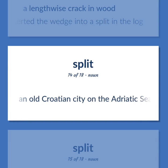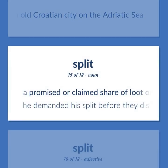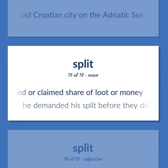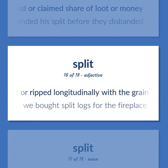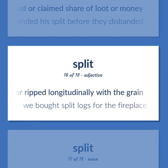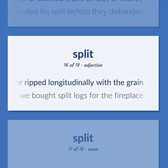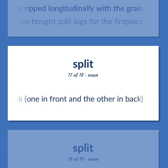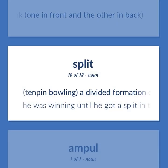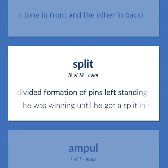An old Croatian city on the Adriatic Sea. A promised or claimed share of loot or money. Example: He demanded his split before they disbanded. Especially of wood: cut or ripped longitudinally with the grain. Example: We bought split logs for the fireplace. Extending the legs at right angles to the trunk, one in front and the other in back. Ten-pin bowling: a divided formation of pins left standing after the first bowl. Example: He was winning until he got a split in the tenth frame.